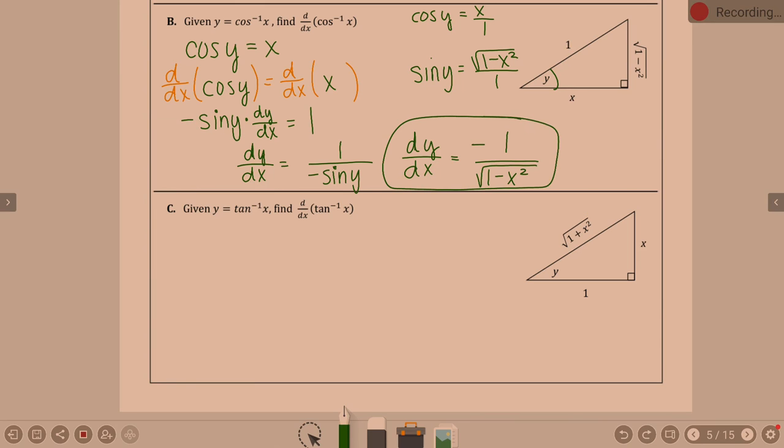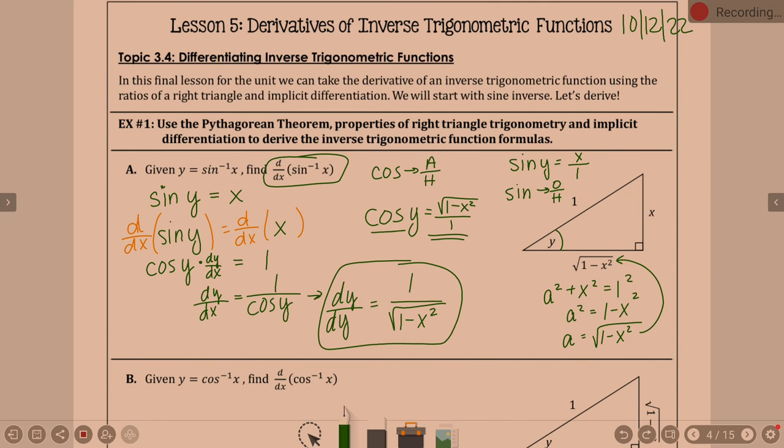So dy dx is negative 1 over square root of 1 minus x squared. That is the derivative of cosine inverse. What's the difference between sine inverse and cosine inverse? A negative. So if you can memorize sine inverse, then you know cosine inverse. So I made a mistake. Can you go back to the last one? Yes.